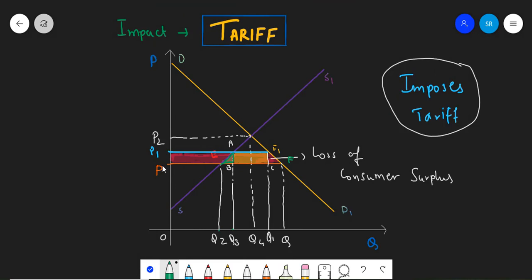When the prices were P, the quantity supplied was Q2. However, after the imposition of tariff, the quantity increased to Q3. This Q3 quantities started to be sold at price P1.